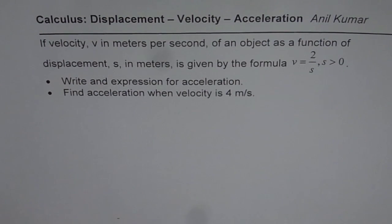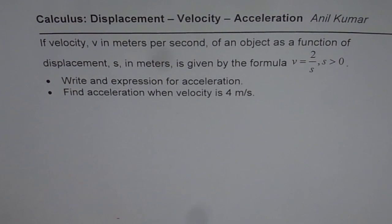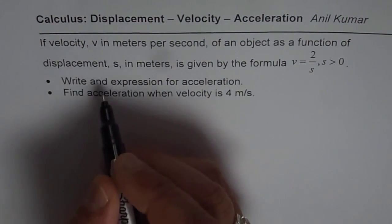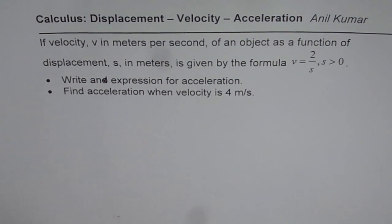I am Anil Kumar. Here is another example relating displacement, velocity and acceleration. The question is: if velocity v in meters per second of an object as a function of displacement s in meters is given by the formula v equals 2 over s, where s is greater than 0, write an expression for acceleration. Part 2 is: find acceleration when velocity is 4 meters per second.